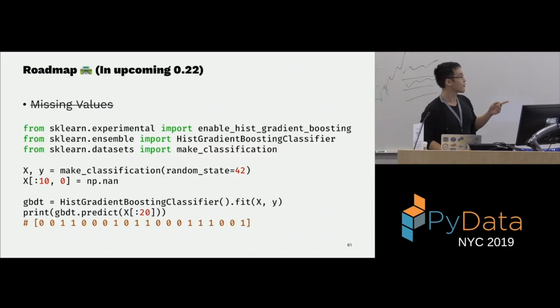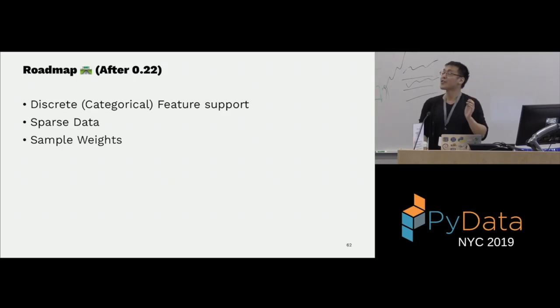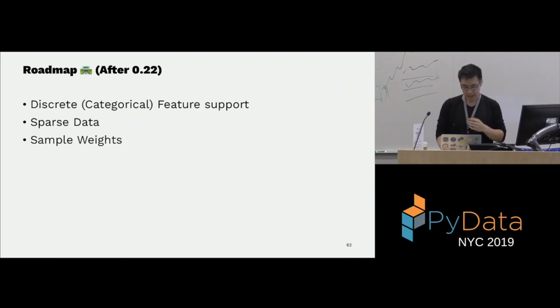On our roadmap: missing values support is coming in 0.22 — if your data has missing values and you call fit and predict, it works. This is the first estimator in Scikit-Learn that natively supports missing values. After 0.22, the feature roadmap includes categorical features support to speed up training, sparse data support, and sample weights.